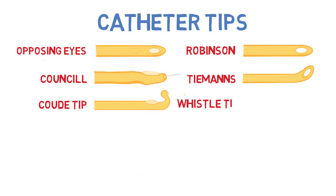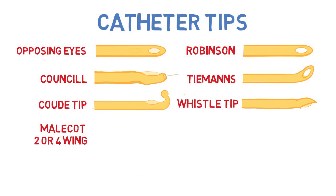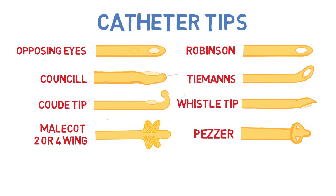Next is the whistle tip catheter, which is best used for evacuation of clots or debris out of the bladder. The next two types are referred to as self-retaining catheters. The Malecot comes in two- or four-winged versions and does not have a balloon mechanism — once deployed, the wings fold out to prevent the catheter from becoming dislodged. The Pezzer looks similar to a mushroom cap and has the same self-retaining design. A hematuria catheter is usually a large French size, with an opening for irrigation and drainage; some are reinforced with metal rings to help prevent blockage.